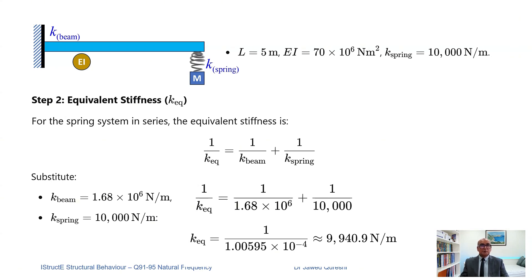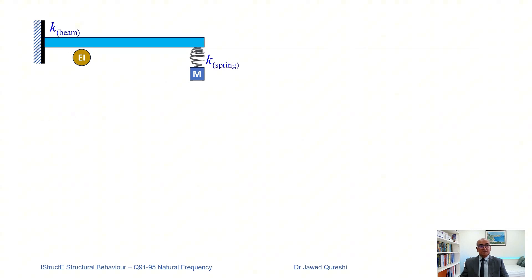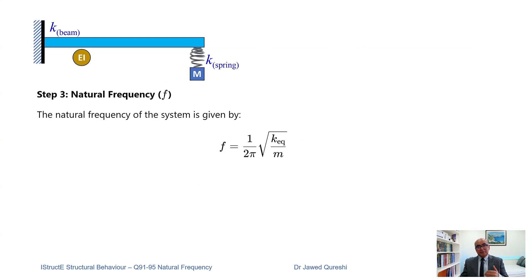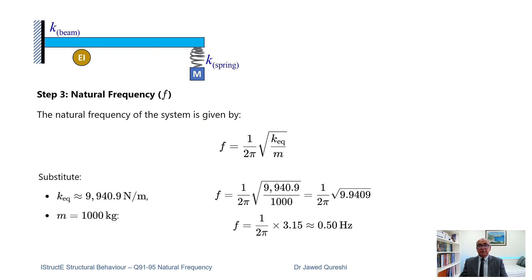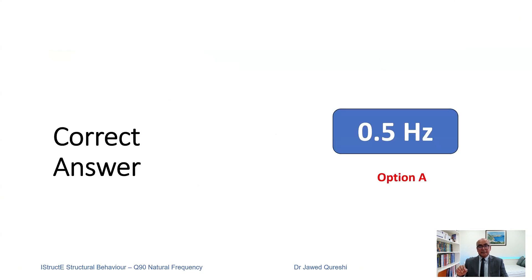Once we have the equivalent stiffness, we use the formula 1 over 2π times the square root of K over M. Putting in these values, the frequency is 0.5 hertz. By attaching the mass to a spring rather than directly to the beam, the stiffness is far less compared to what we got earlier — it was about 6.5 hertz without a spring, but now it is 0.5 hertz, meaning the time period changes to 2 seconds. The correct answer is option A: 0.5 hertz.